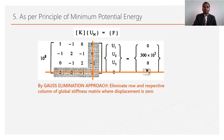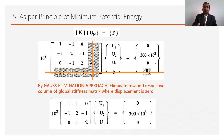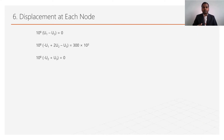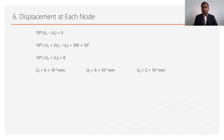After deleting the row and column, the remaining terms give a reduced system. From this matrix we form 3 equations to find u1, u2, u3. The first equation is: 10⁸(u1 − u2) = 0, with two similar remaining equations. Solving gives: u1 = 6 × 10⁻³ mm, u2 = 6 × 10⁻³ mm, and u3 = 3 × 10⁻³ mm.